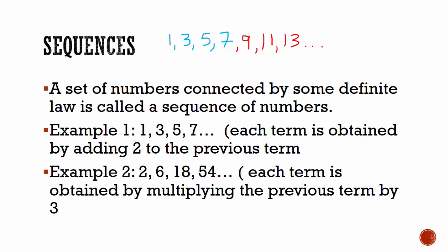Second example here is where we see the first number is 2, the second number is 6, the third number is 18, the fourth number is 54. We're looking for the pattern,